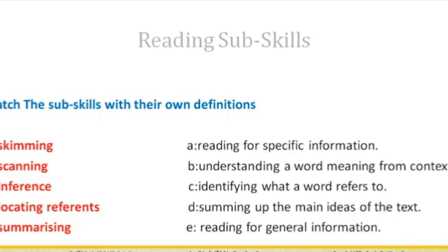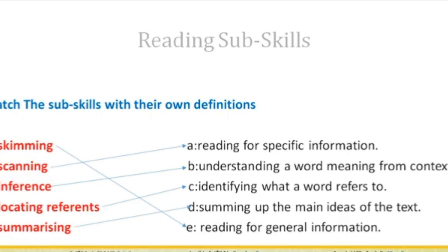Let's correct the exercise. Skimming is a reading sub-skill that means reading for general information. Scanning means reading for specific information. Inference refers to understanding a word's meaning from context. Locating reference means identifying what a word refers to. Summarizing means summing up the main ideas of the text.